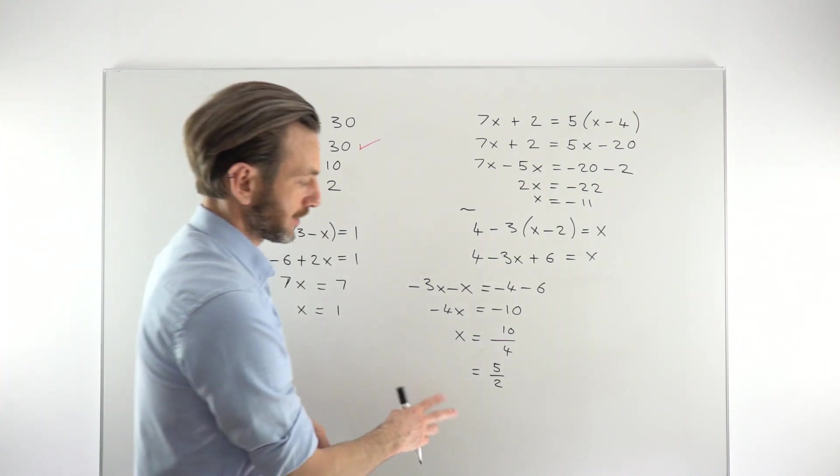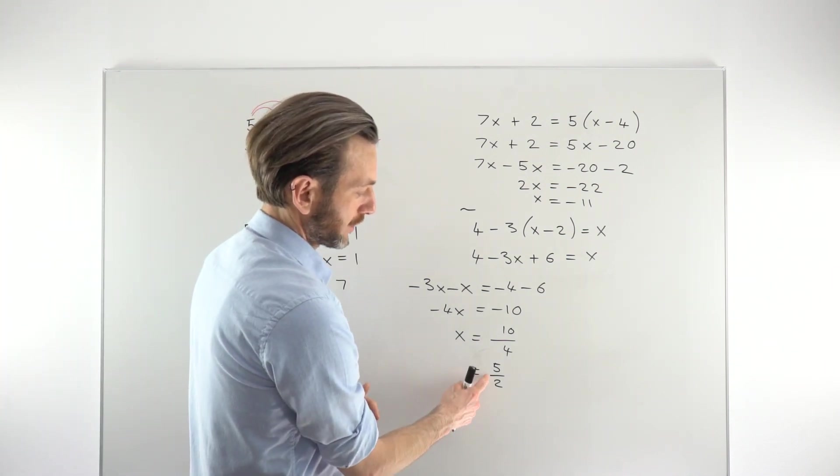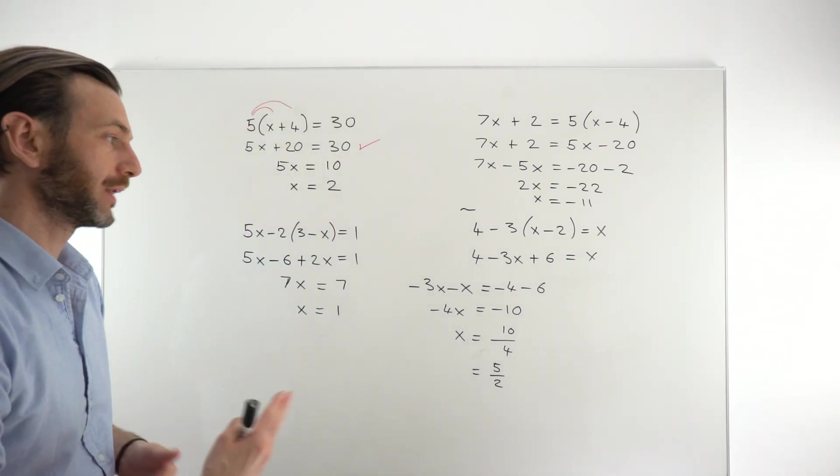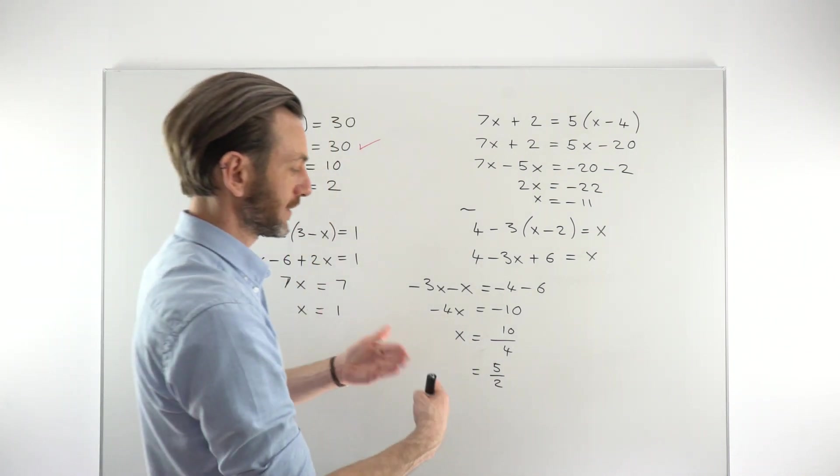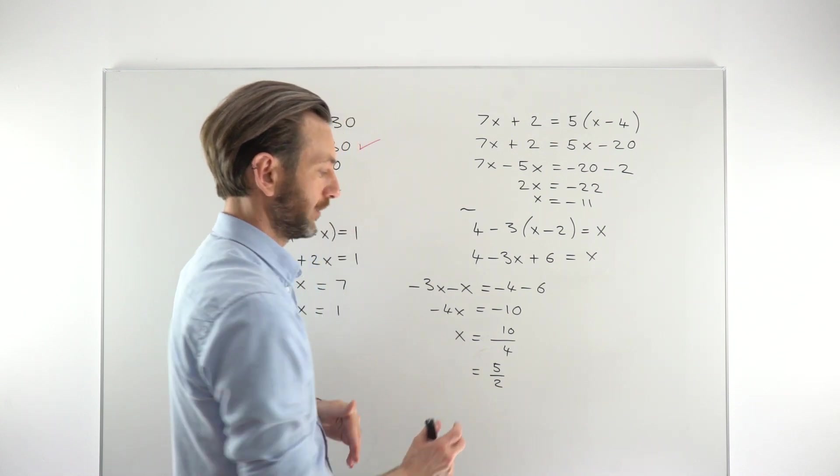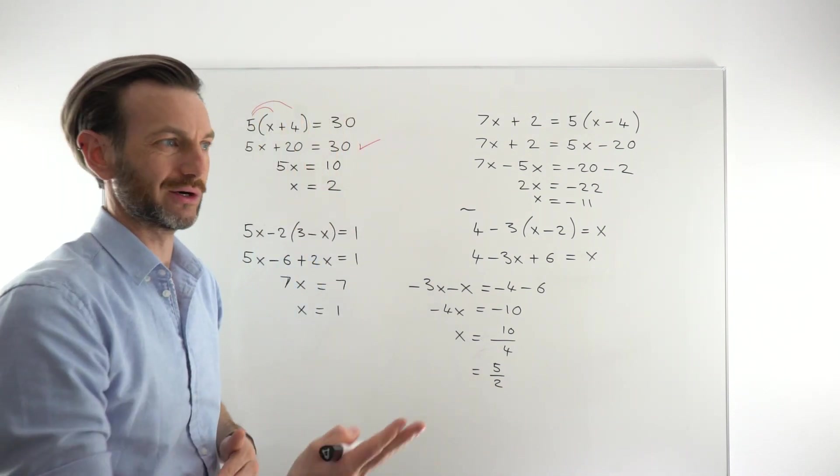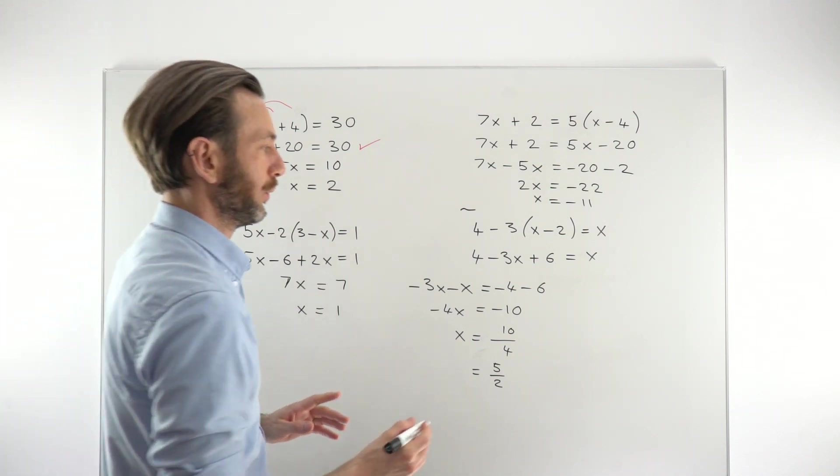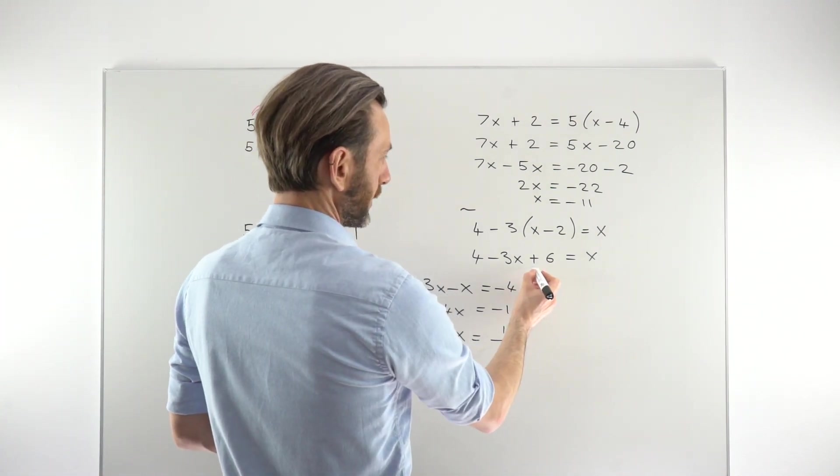With these linear equations, sometimes the answers will come out to be fractions. It's fine to leave it like that. Or you could write it as 2.5 as a decimal. It might depend on the question. It might necessitate a decimal answer. For example, if it was to do with, say, money or some numerical value.